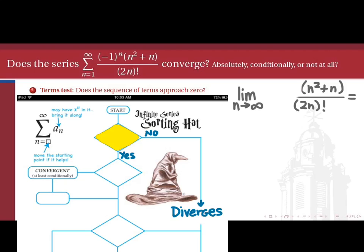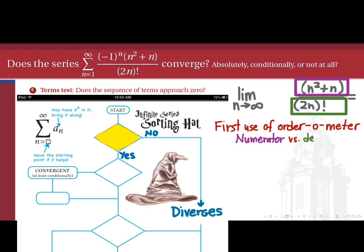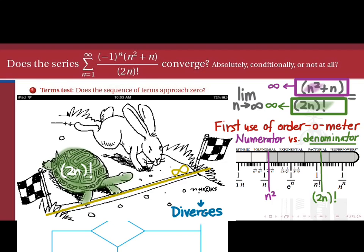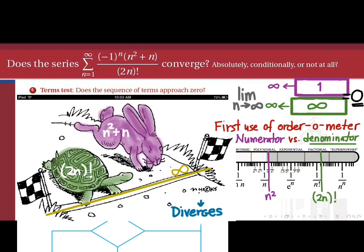So let's get rid of the negative 1 to the n and figure out what is the limit as n goes to infinity of n squared plus n over the quantity 2n factorial. We'll make our first use of the order thermometer, asking which between the numerator and the denominator approaches its limit more quickly at a higher order. Both n squared plus n and 2n factorial are approaching infinity, but the denominator, being factorial speed, is reaching its limit at a higher order. So the 2n factorial is getting to infinity before the n squared plus n is. This limit is of the form infinity downstairs, one upstairs, which is just one of our names for zero.